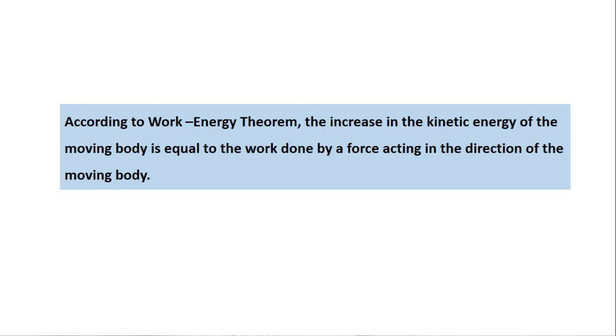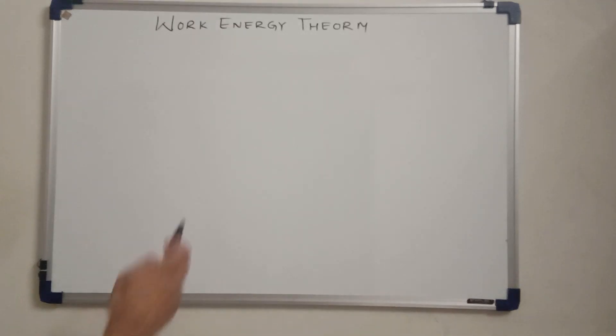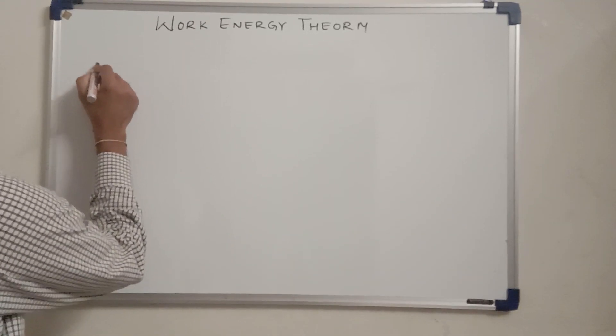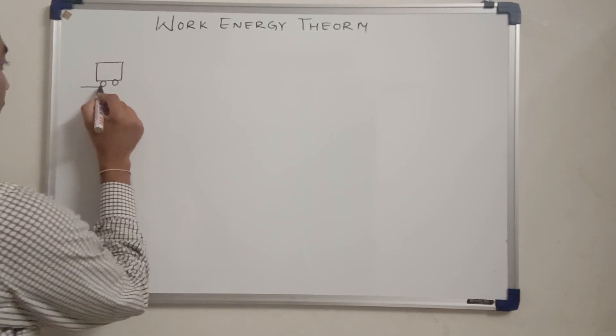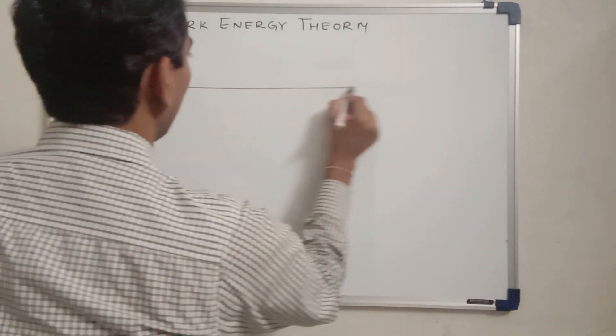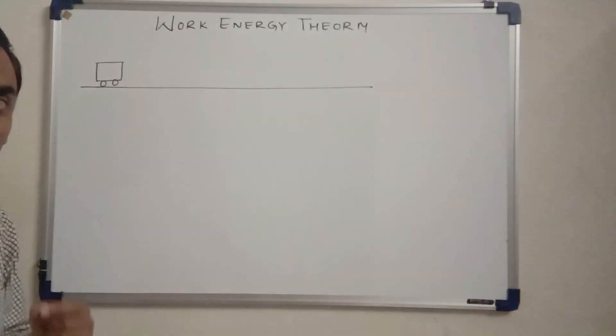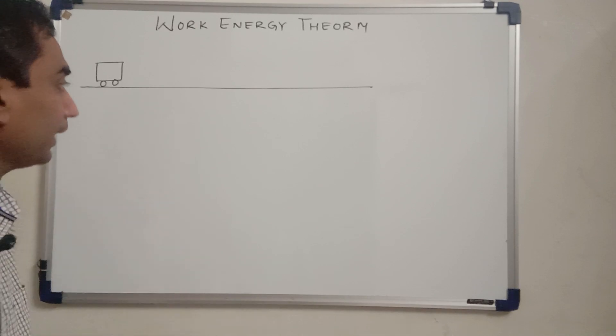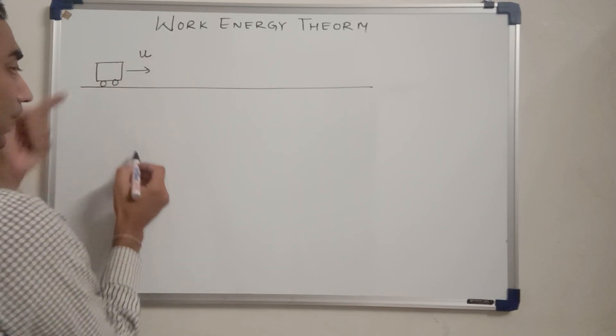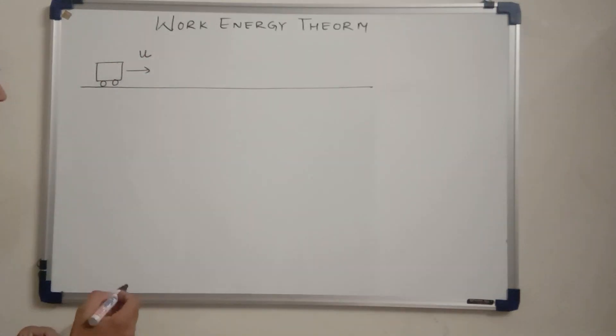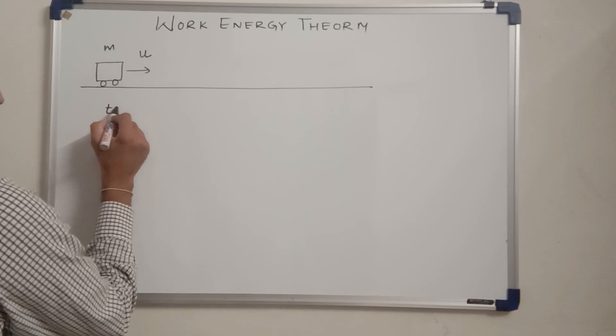Our main purpose is to prove this work energy theorem. For that I am going to consider a situation. Here we have a car and this car is moving on a frictionless track, so we are considering that there is no friction in the track. This was already moving with velocity u in this particular direction. Mass of the car is m.